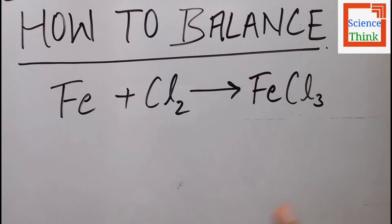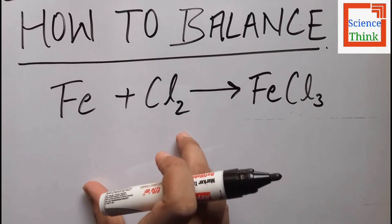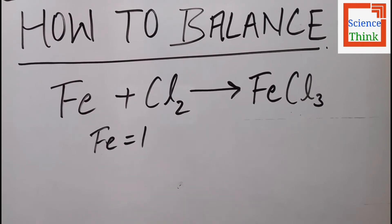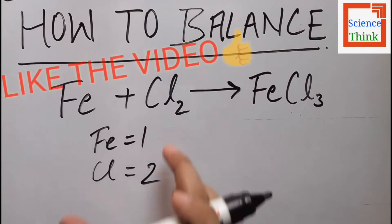This is an unbalanced chemical equation. For a balanced chemical equation, the atoms of each element on the reactant side as well as on the product side should be equal, so that it obeys the law of conservation of mass. On the reactant side we have one iron atom and two chlorine atoms.